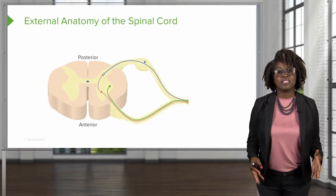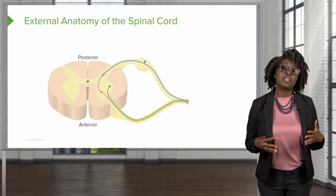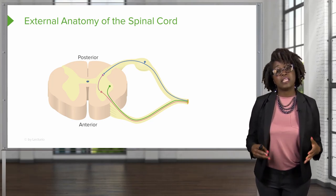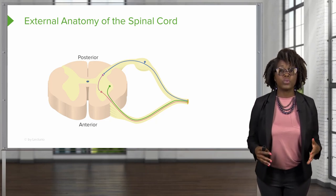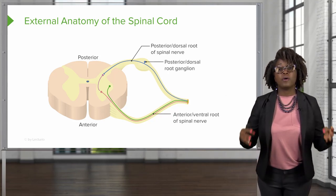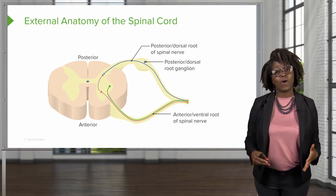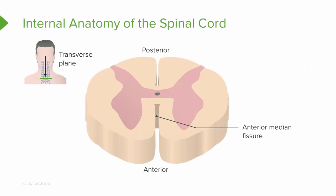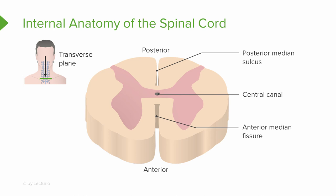Now let's discuss the anatomy of the spinal cord, starting with the external anatomy. Extending from the spinal cord we have two roots and rootlets: the posterior roots and the anterior roots. The posterior root also has a swelling called the posterior root ganglion. Moving inward, on the anterior portion of the spinal cord we have a fissure known as the anterior median fissure, and on the posterior end we have the posterior median sulcus. In the center is the central canal, where some cerebrospinal fluid is found.